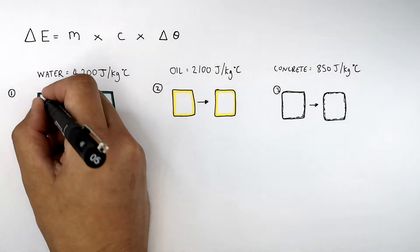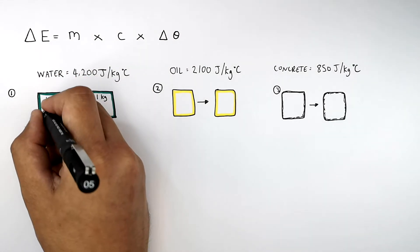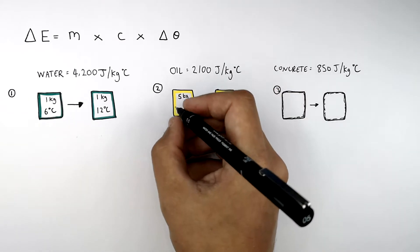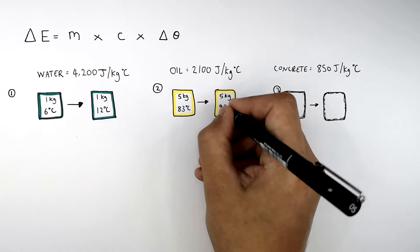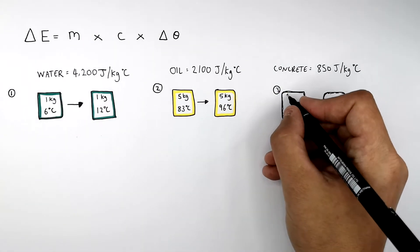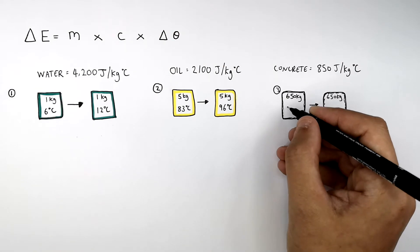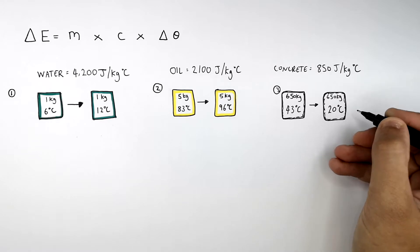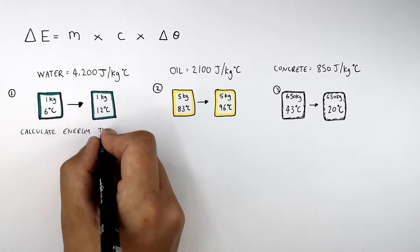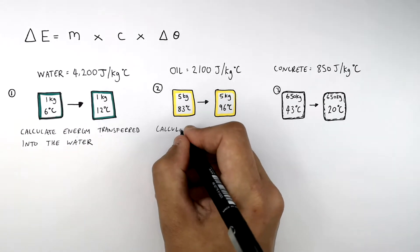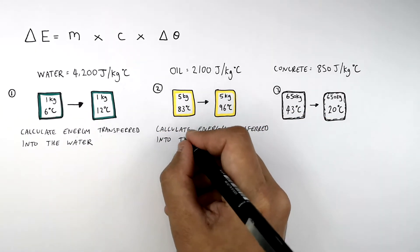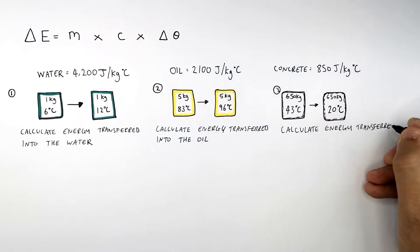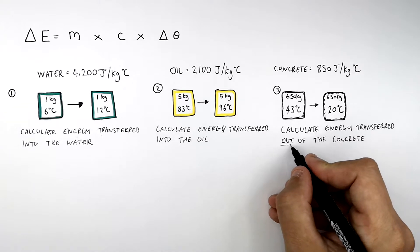We increased one kilogram of water from 6°C to 12°C. We increased five kilograms of oil from 83°C to 96°C. And 650 kilograms of concrete decreased its temperature from 43°C to 20°C. We want to calculate the energy transferred into the water, the energy transferred into the oil, and the energy transferred out of the concrete thermal energy store into the surroundings.